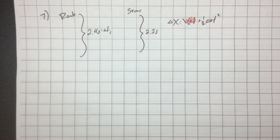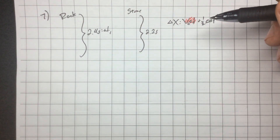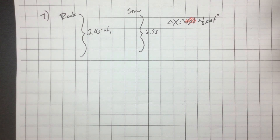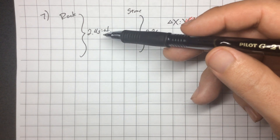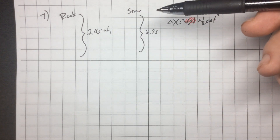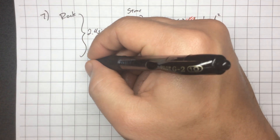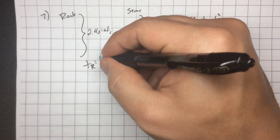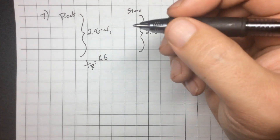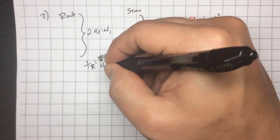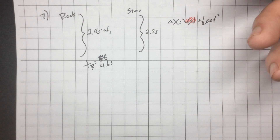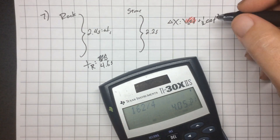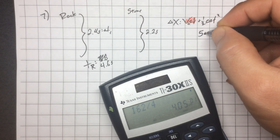We're looking at this equation: one-half at squared (initial velocity is zero since both are dropped). If I can find where they're at after their respective times of falling, I can subtract. The total time of the rock is 2.4 plus 2.2 equals 4.6 seconds. The stone is falling for 2.2 seconds. Using 5 times t squared: for the rock, 5 times 4.6 squared equals 105.8 meters of fall; for the stone, 5 times 2.2 squared equals 24.2 meters of fall.